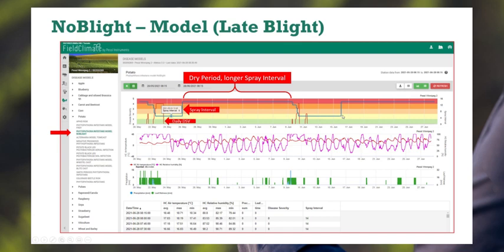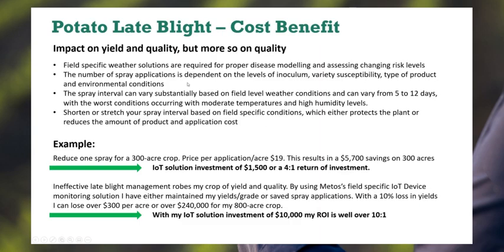The impact of potato late blight is quite substantial, especially on yield and quality. With field-specific solutions for proper disease modeling, you can assess changing risk levels. There are a number of different models and varying spray applications depending on inoculum level, variety susceptibility, type of product, and environmental conditions. The spray interval can vary substantially based on local field weather data — hence the need for local weather stations in potato crops — ranging anywhere from 5 to 12 to 15 days depending on conditions.